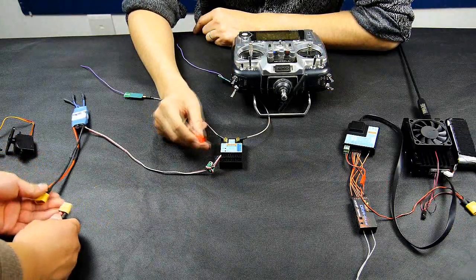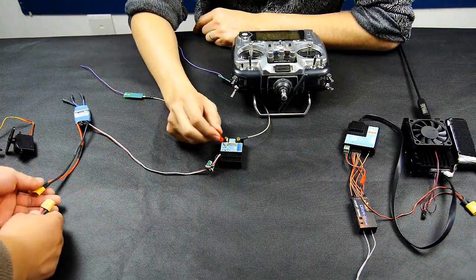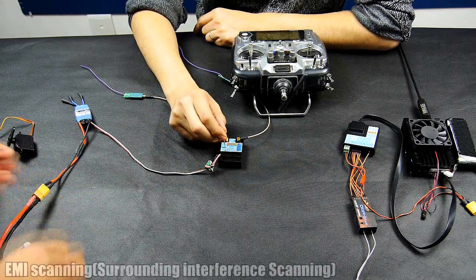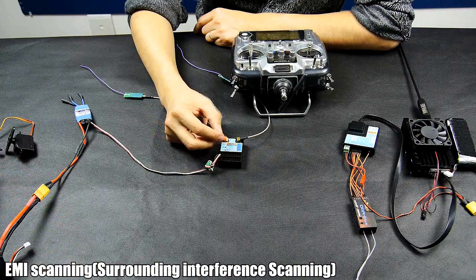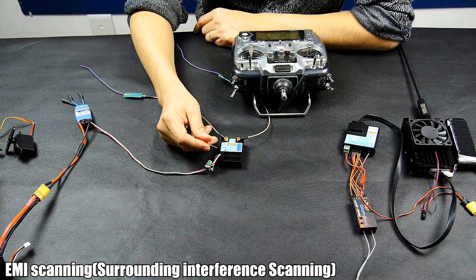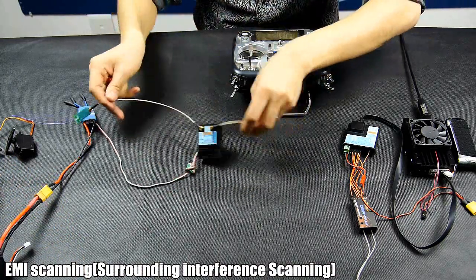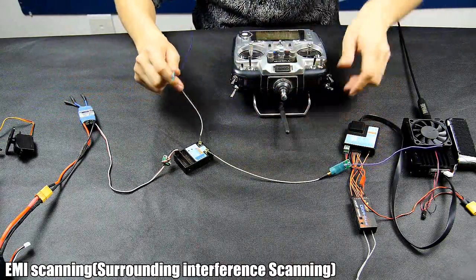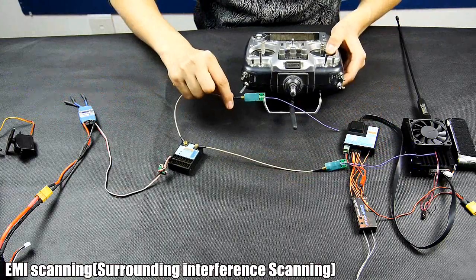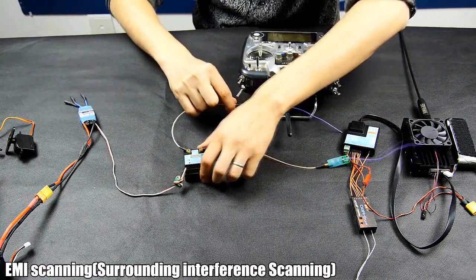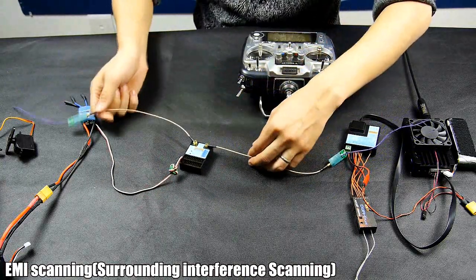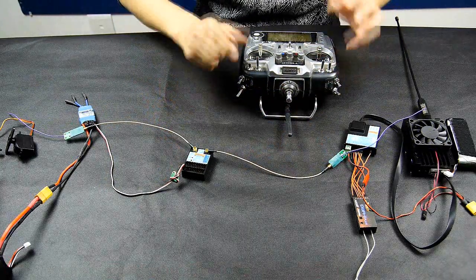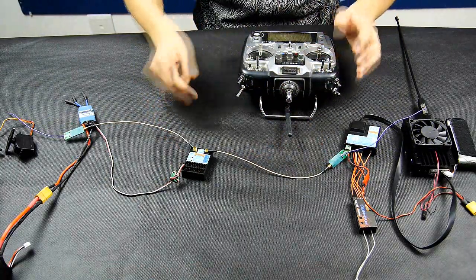Now I'm going to show you how to use the EMI scan function. Just press on the button and power on the receiver. As you can see, the LEDs are flashing, indicating the surrounding noise. It's scanning the surrounding noise by two antennas. Because I'm using a radio here, if I put it close to my radio, you can see more LEDs light up. And if there's no LED or maybe one or two LEDs light up, meaning the surrounding interference is very, very limited.